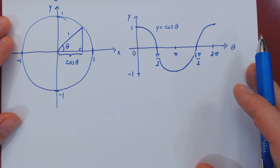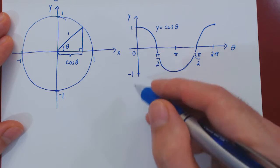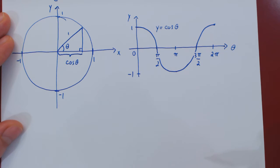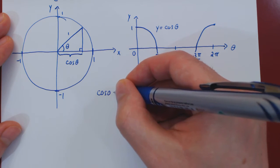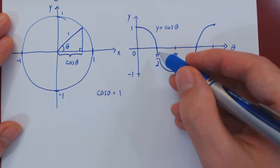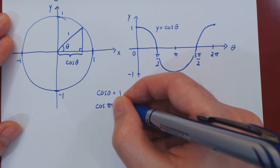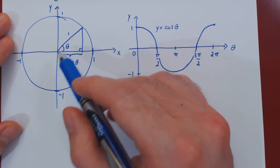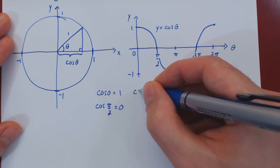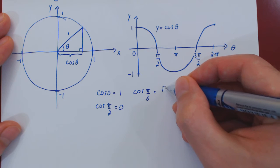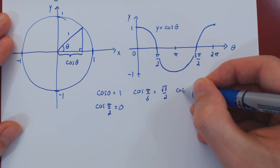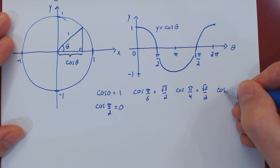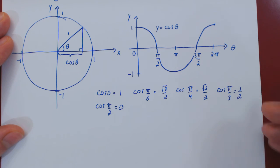We have the graph of cosine of theta simply by remembering that cosine is the length of the base of our right triangle with hypotenuse 1, as theta changes from 0 to 2π. Cosine of theta has five key values. Cosine of 0 equals 1, and at π/2, cosine is 0. The three other key angles in the first quadrant are π/6, π/4, and π/3: cosine of π/6 is √3/2, cosine of π/4 is √2/2, and cosine of π/3 is 1/2.